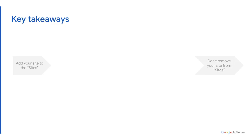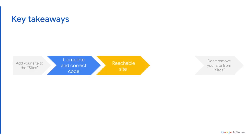To summarize, here are the most important points to get your account activated. One: copy the code exactly as it appears in your AdSense homepage. Two: make sure your site is reachable. And three: review our program policies. We hope this video helps you better understand how you can get your site approved. To learn more, you can visit the AdSense Help Center and AdSense website via the links in the description of this video.